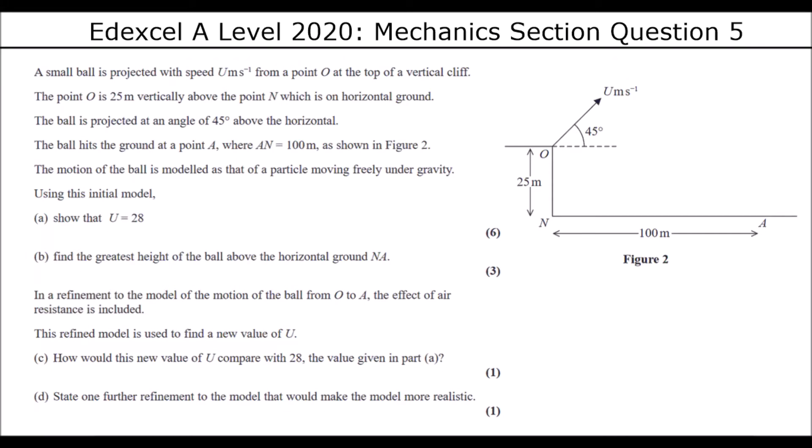A small ball is projected with speed u meters per second from a point O at the top of a vertical cliff. The point O is 25 meters vertically above N, which is the horizontal ground. The ball is projected at an angle of 45 degrees. The ball hits the ground at A, where A to N is 100 meters. The motion of the ball is modeled as that of a particle moving freely under gravity. Using this initial model, show that u is 28.